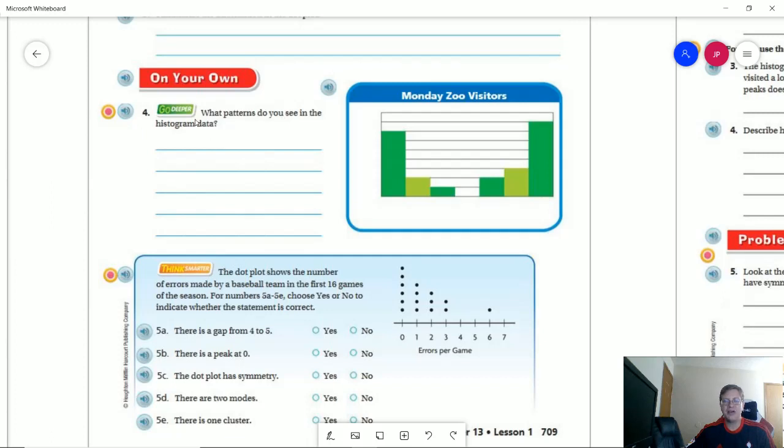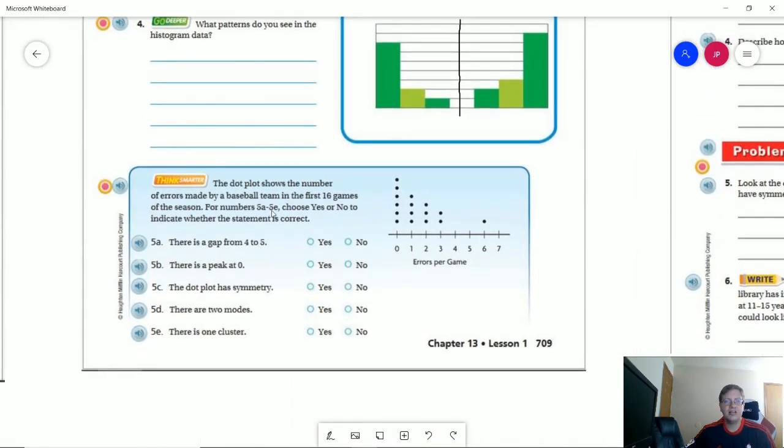Number four, what kind of pattern do you see? If we were to draw a line through the middle here, you can see that our left-hand side and our right-hand side are mostly symmetrical. So we could talk about that. We could say that we have peaks on the left and the right-hand side. And then we kind of go down to a gap in the middle.